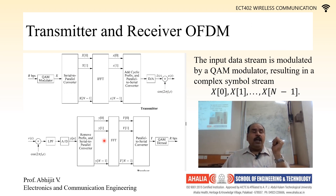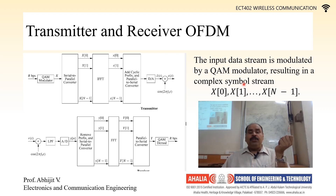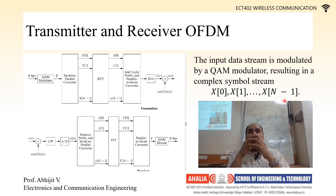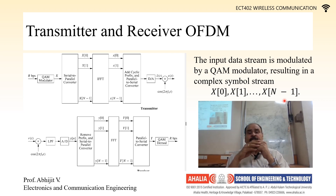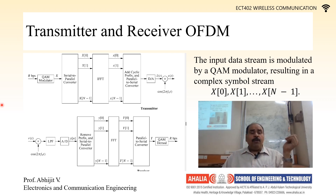With the help of this block diagram, let us see how OFDM symbols are generated. The input data stream is modulated by a quadrature amplitude modulation QAM modulator, resulting in a complex symbol stream X0, X1 up to X(N-1). We have a total bandwidth B divided into N equal parts, each with B/N. Each input symbol is represented as Xi, from X0 to X(N-1).